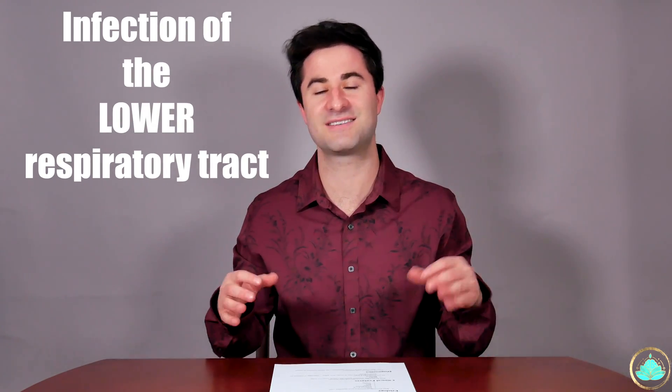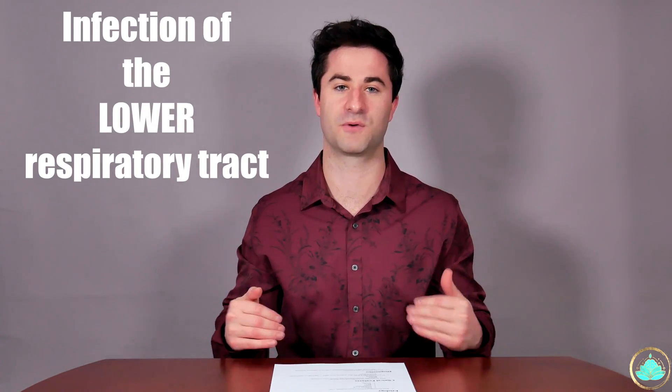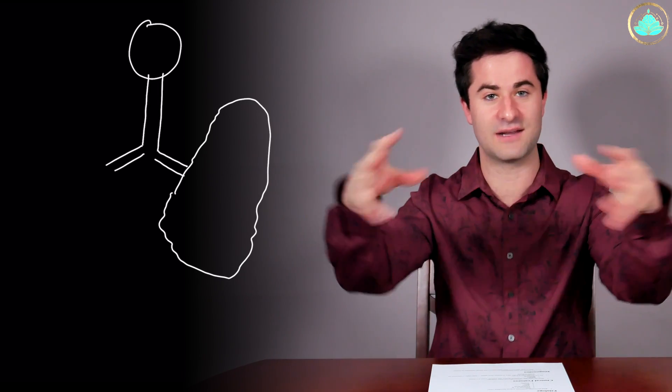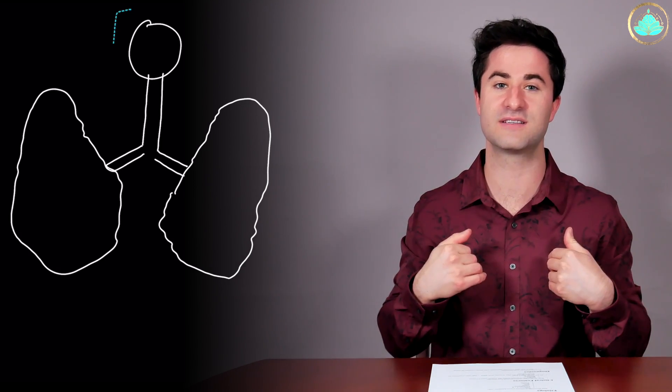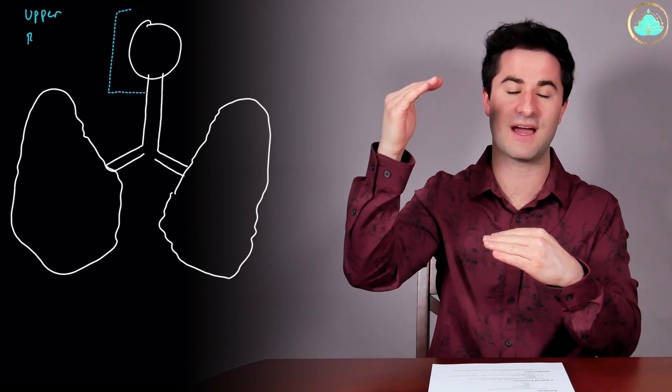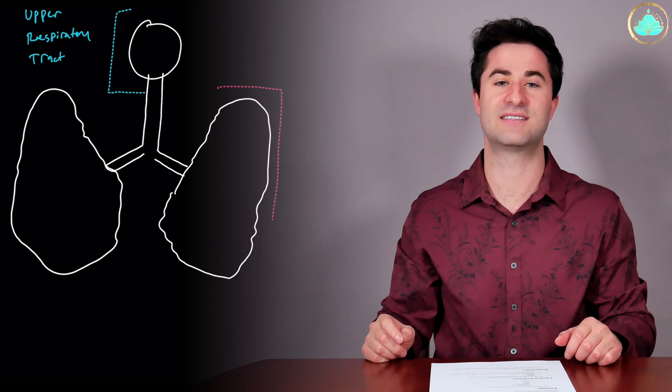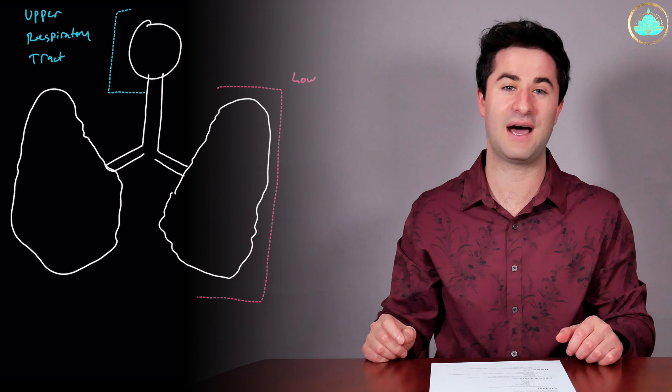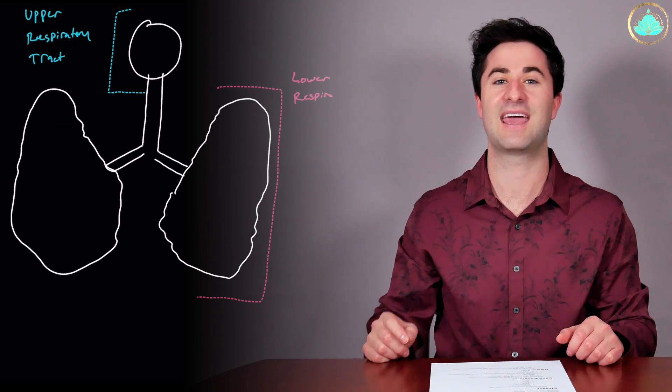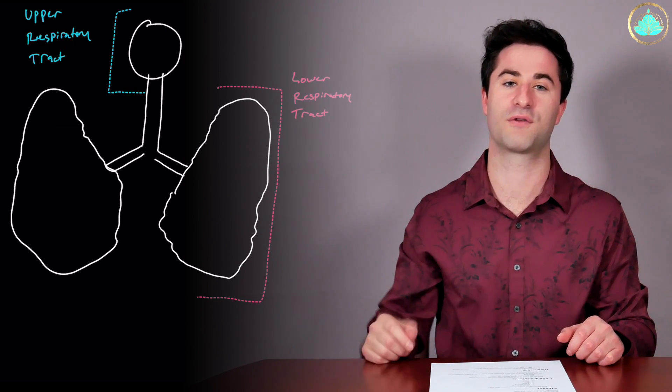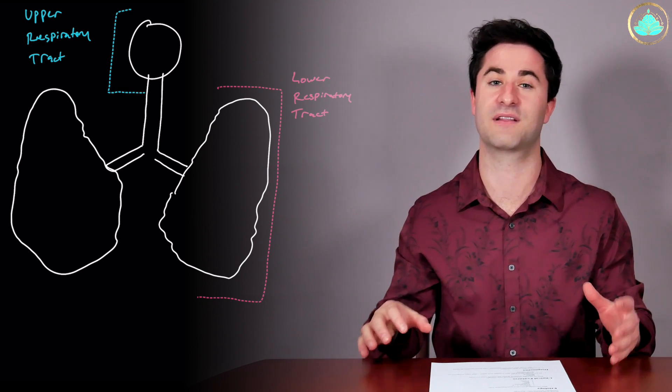Acute bronchitis by definition is an infection that has to do with the lower respiratory tract. So your respiratory tract, or the pathway that the air goes from outside into the world into your lungs, is divided into an upper respiratory tract and a lower respiratory tract. The upper respiratory tract consists of your nose, your mouth, sinuses, and the upper part of your throat known as the pharynx and the larynx.